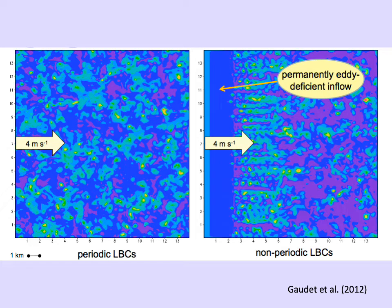This is an example showing how lateral boundary conditions can affect model simulation. This is a large eddy simulation case with periodic and non-periodic lateral boundaries. The left panel shows results with periodic lateral boundaries — after the initial spin-up time, realistic 3D structures develop throughout the model domain. The right panel shows results with non-periodic lateral boundaries — turbulent structures don't exist in the inflow boundary, so the model area close to the inflow boundary remains 3D-deficient, resulting in an unreasonable simulated 3D structure.